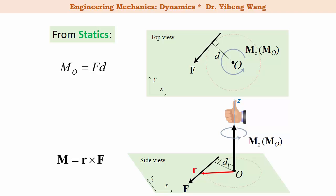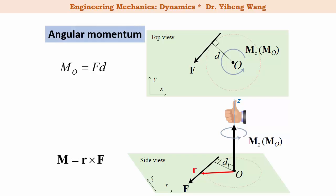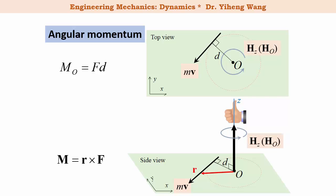Now we're going to introduce angular momentum in a very similar way. Instead of having the force vector, now we have the linear momentum vector, which is mass multiplied by the velocity vector. And instead of having the moment caused by the force, now we have angular momentum, which is the moment caused by linear momentum.